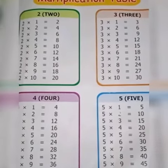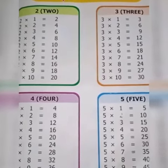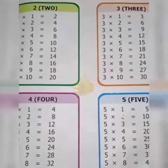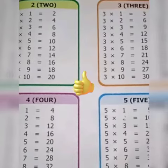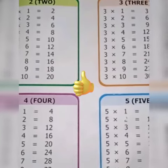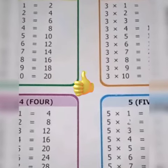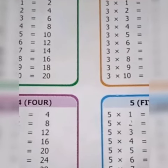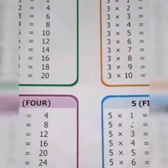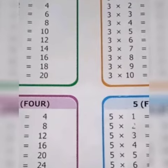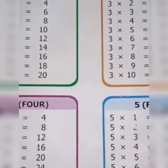Multiplication Table 2. 1s are 2, 2 2s are 4, 2 3s are 6, 2 4s are 8, 2 5s are 10, 2 6s are 12.